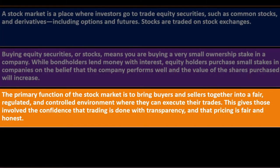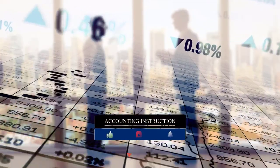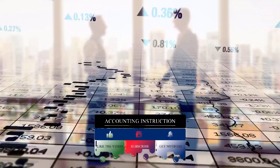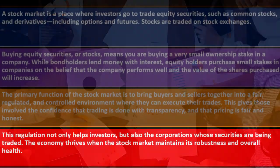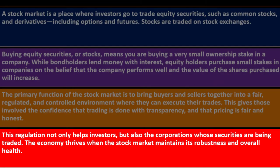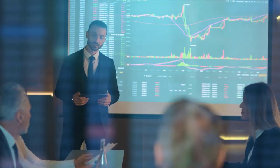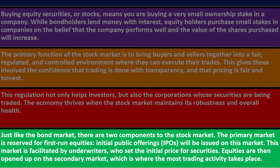The primary function of the stock market is to bring buyers and sellers together into a fair, regulated, and controlled environment where they can exercise their trades. This gives those involved the confidence that trading is done with transparency and that pricing is fair and honest. This regulation not only helps investors but also the corporations whose securities are being traded. The economy thrives when the stock market maintains its robustness and overall health, and U.S. exchanges can garner significant capital investment due to their high level of security and trust.